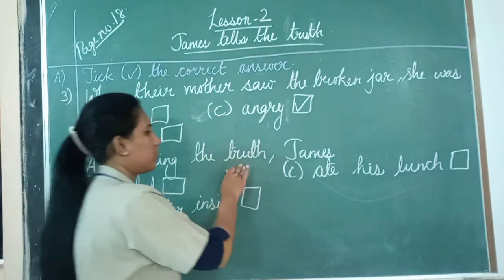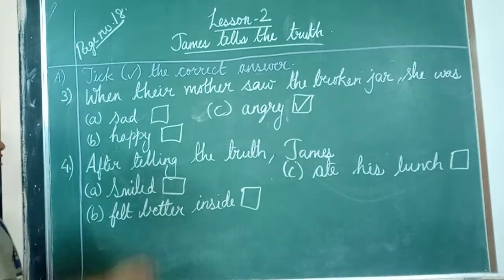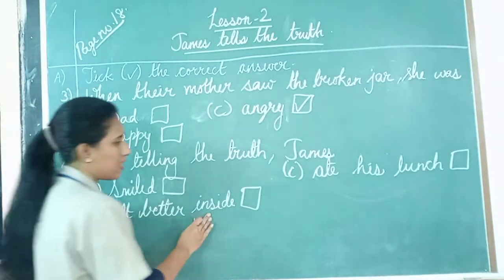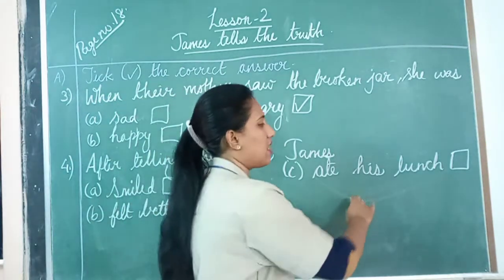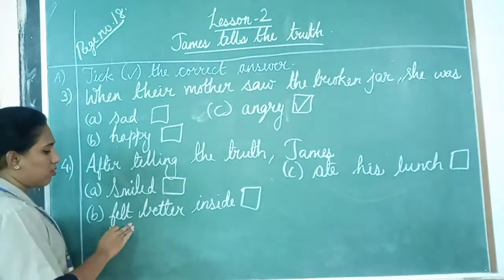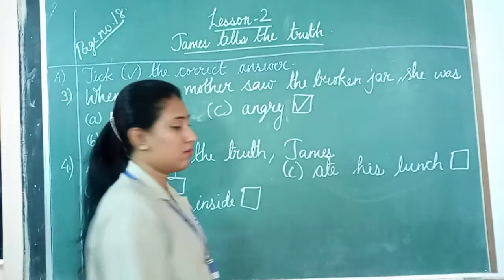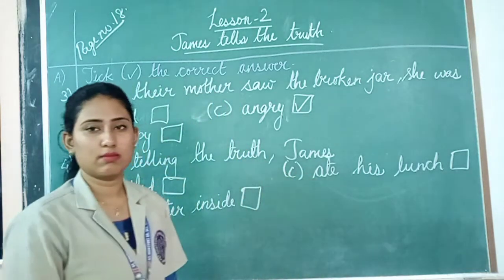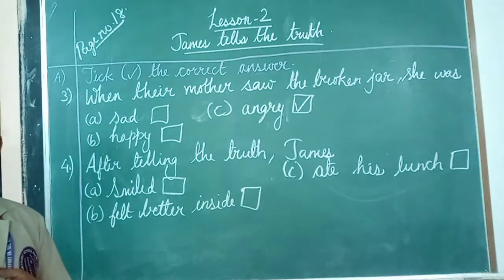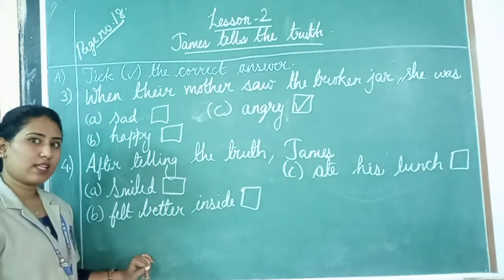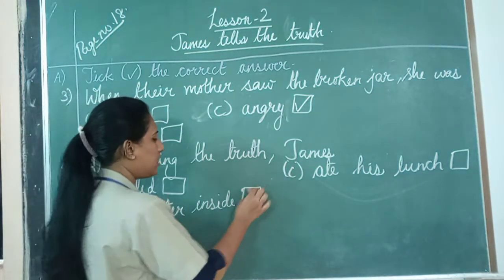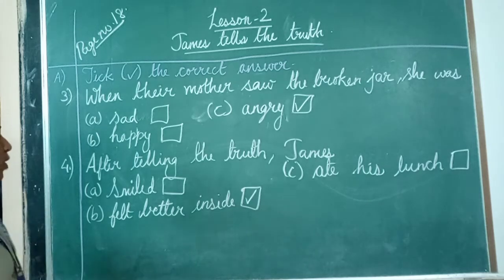After telling the truth, James... what did James feel after telling the truth? Options are: he smiled, he felt better inside, or he ate his lunch. What did James say to his mother? He said, 'After telling the truth, I feel good inside.' So option B is the right one — he felt better inside. Tick on option B, everyone.